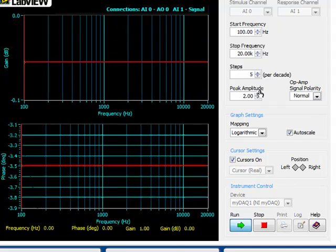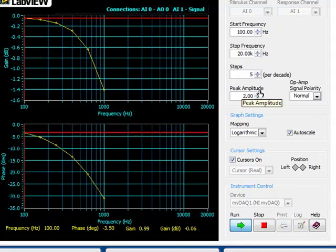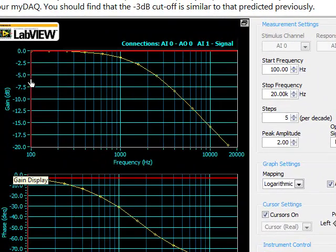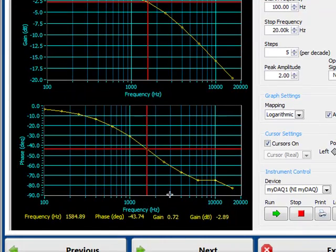So if we run that, that'll iterate through all the different frequencies we've specified and give us the real response of the circuit. And we can see if we go to about the minus 3 dB point, we've got a similar kind of cutoff frequency to that as we predicted.